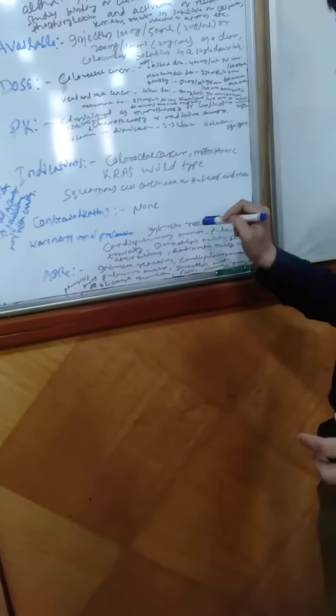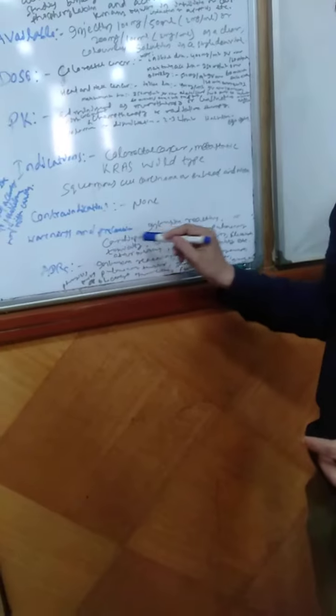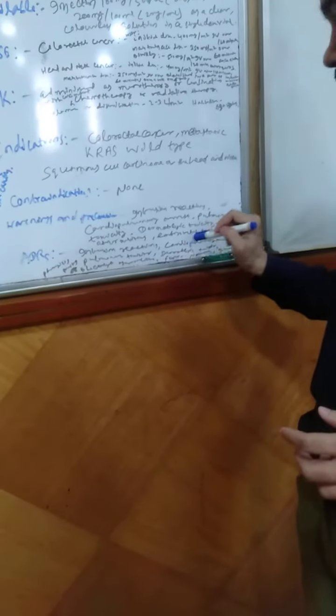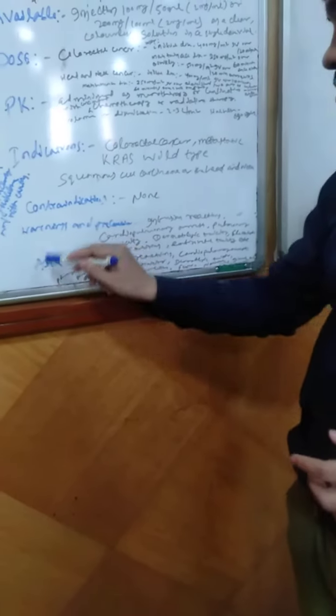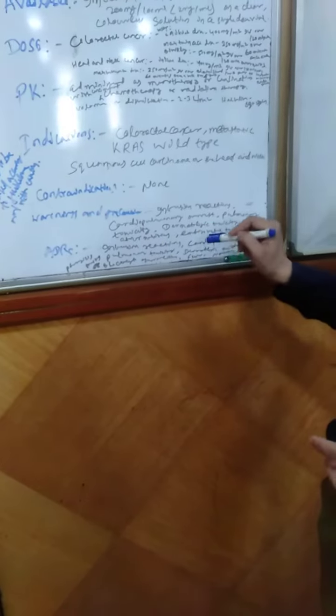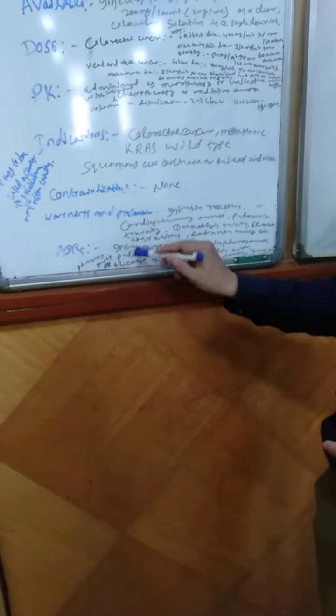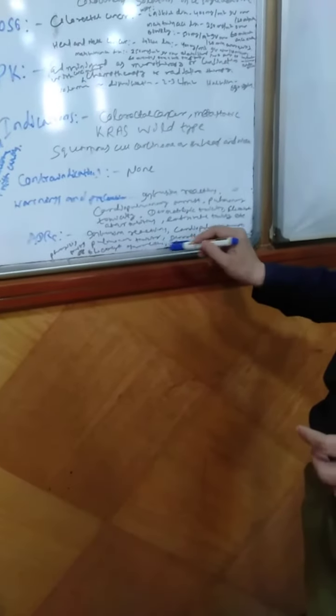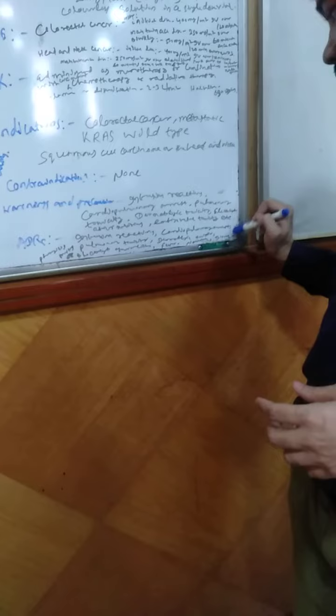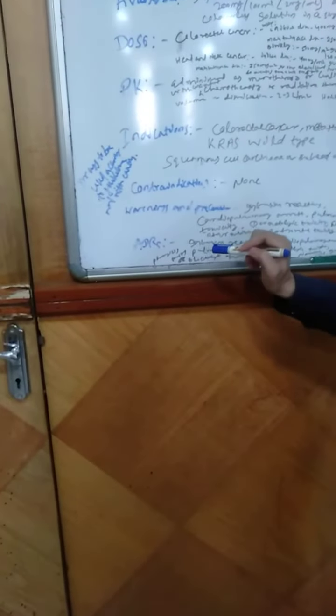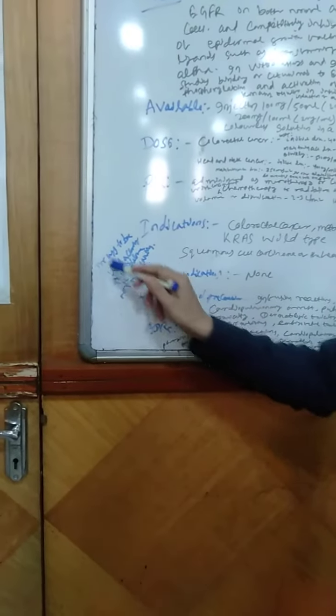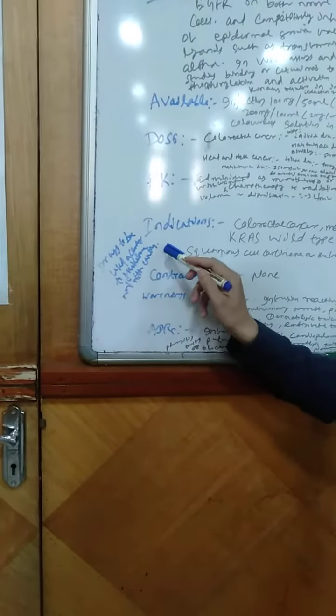Coming to the contraindications, there are no absolute contraindications, but precautions include infusion reactions, cardiopulmonary arrest, pulmonary toxicity, dermatologic toxicity, electrolyte abnormalities, and embryo-fetal toxicity. The adverse reactions are infusion reactions, cardiopulmonary arrest, pulmonary toxicity, dermatologic toxicity, and electrolyte abnormalities like hypomagnesemia, hypokalemia, diarrhea, stomatitis, pharyngitis, arthralgia, etc. So this drug is having some adverse reactions, so the drug should be used according to the guidelines and with caution.